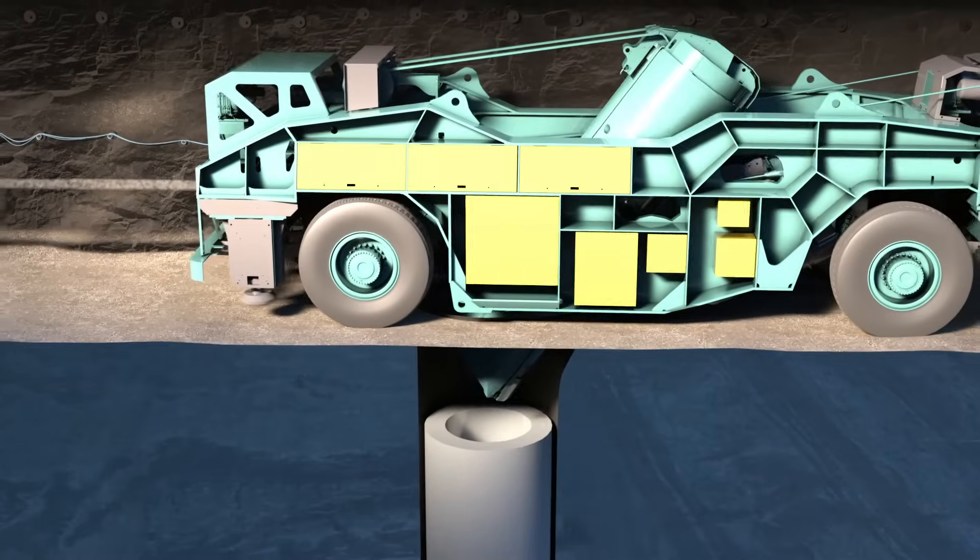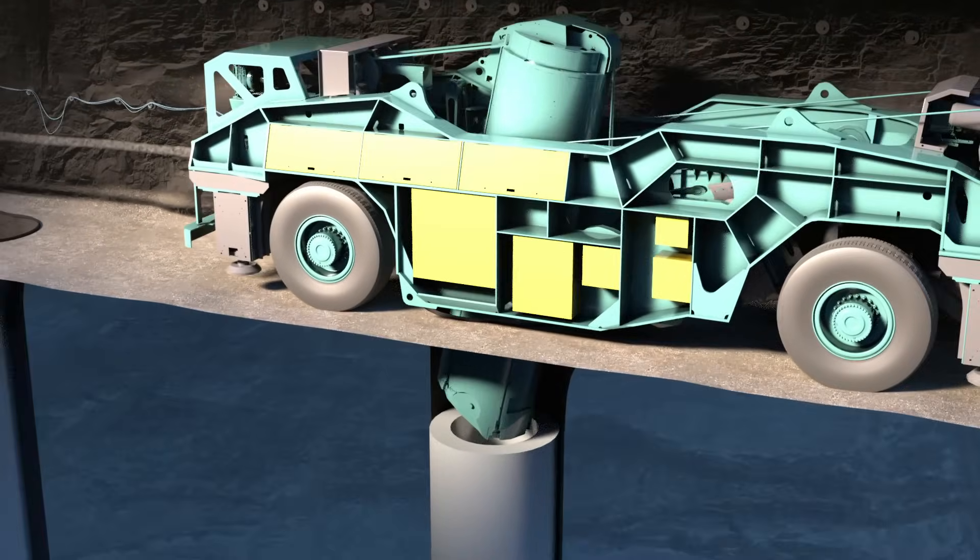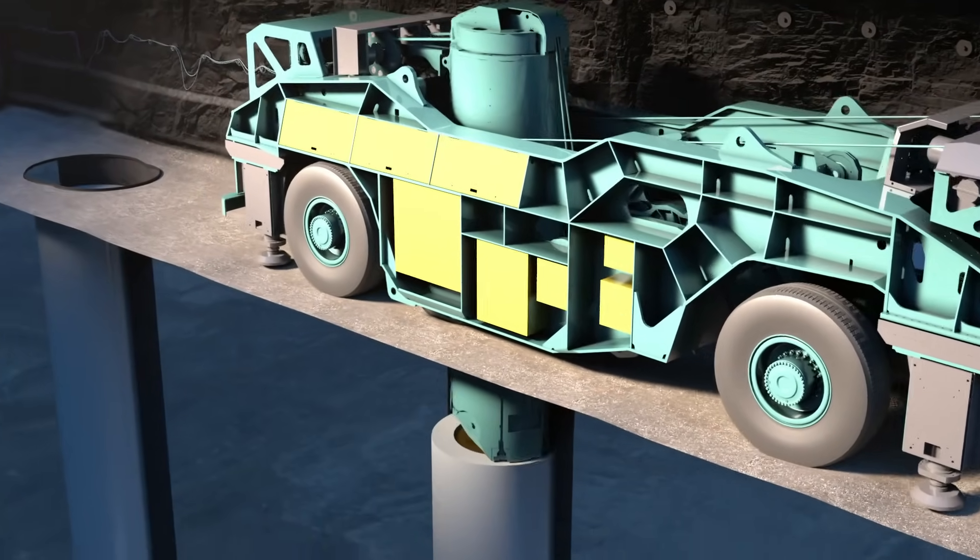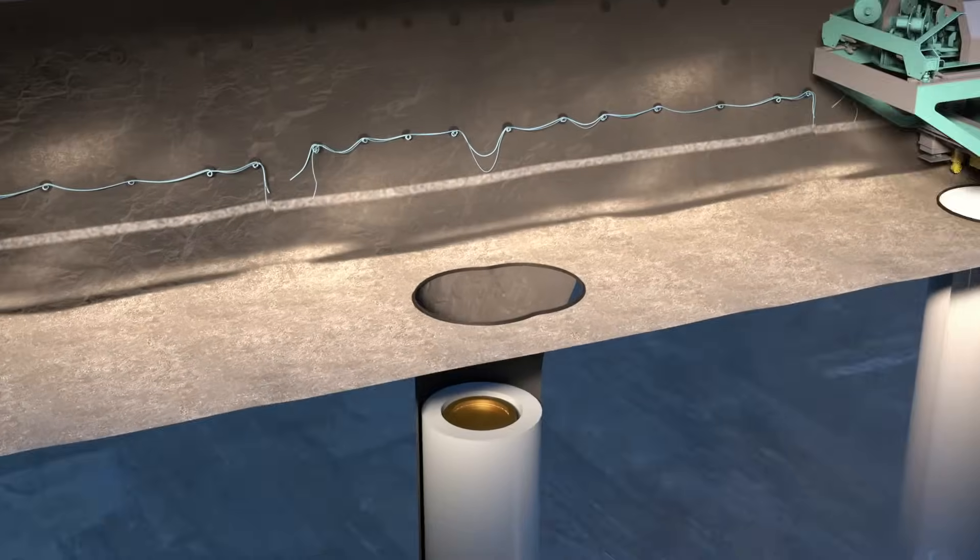The installation vehicle transfers the canister from loading station to disposal tunnel then installs the canister into the disposal hole with an accuracy of a mere few millimeters.